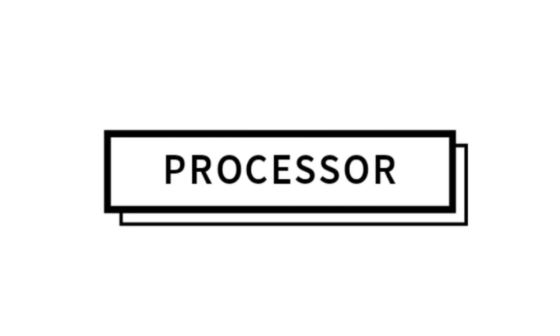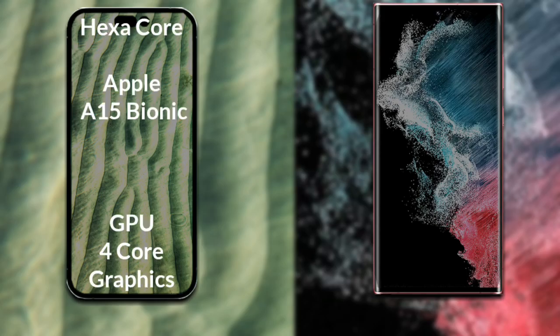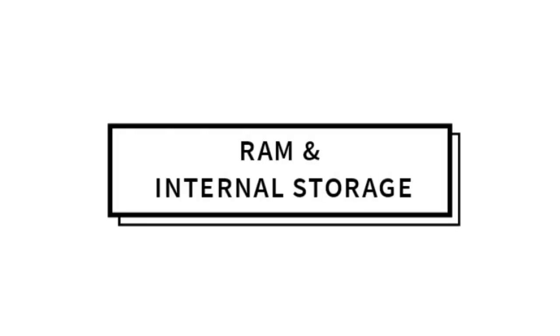Let's talk about both phones' processors and GPUs. The iPhone 14 has an Apple chip with Apple Graphics GPU. The Samsung Galaxy S22 Ultra has an octa-core Qualcomm Snapdragon 8 Gen 1 processor with an Adreno 730 GPU.